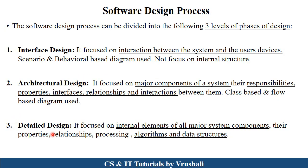The next one is detailed design. Detailed design focuses on the internal elements of all the major system components — meaning it focuses on algorithms, data structures, and databases. So generally, interface design focuses on the front-end interface, architectural design focuses on the middle-end, and detailed design focuses on the back-end of a particular product.